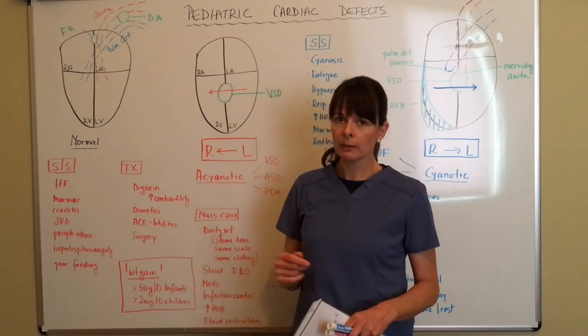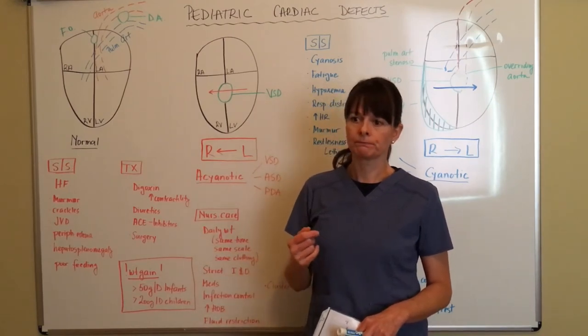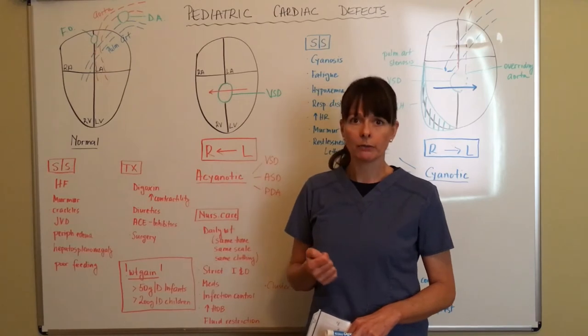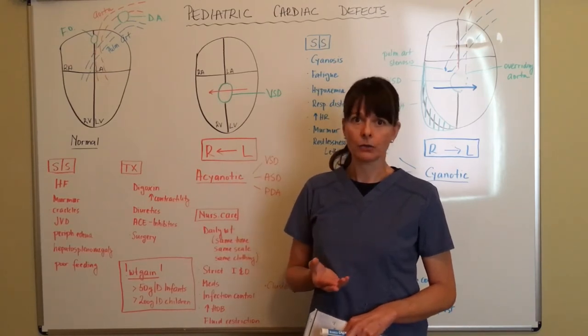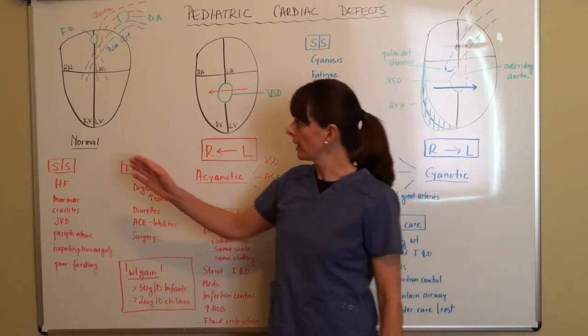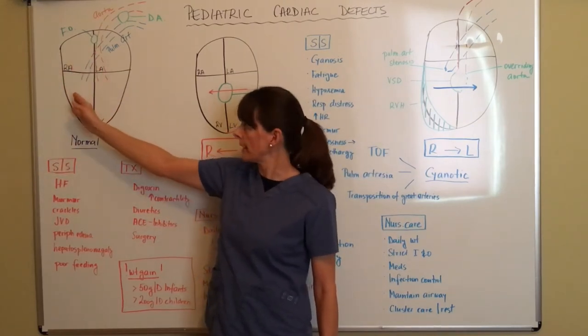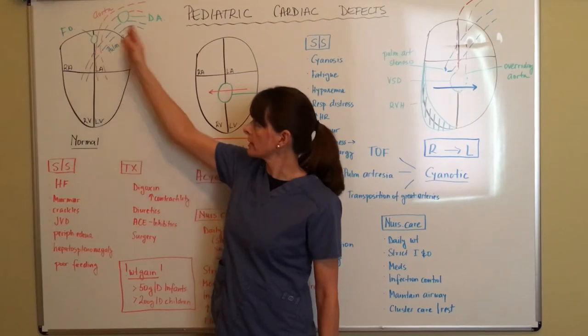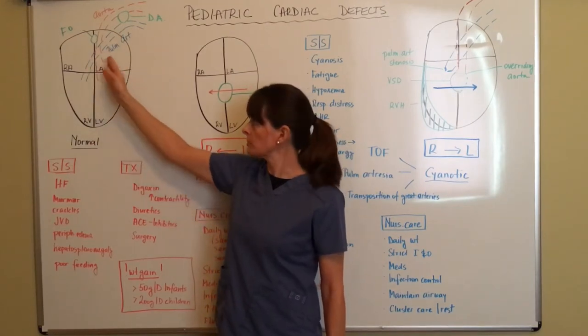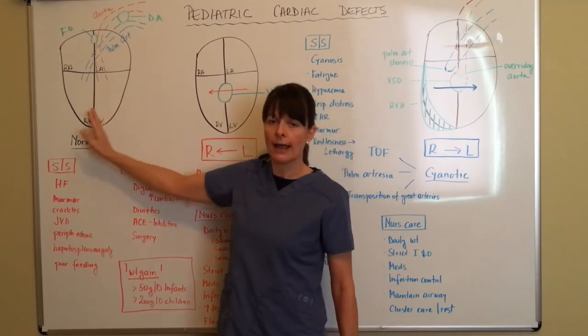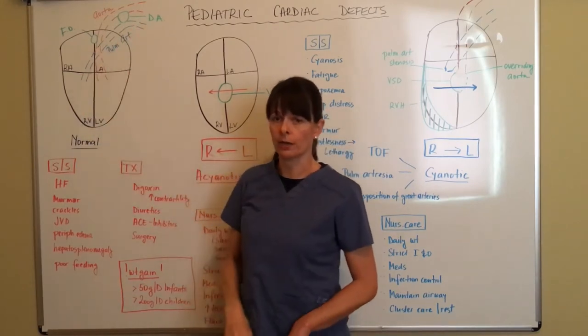Now, if we think about when these two structures close, then we have normal blood flow, which is just like in an adult or in a healthy child, where the blood returns from the body to the right atrium, flows down to the right ventricle, goes out to the lungs, gets oxygenated, returns back to the left atrium, goes out to the left ventricle and then out to the body through the aorta.